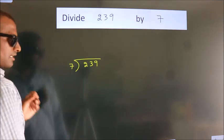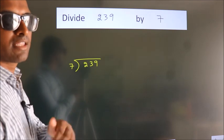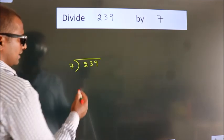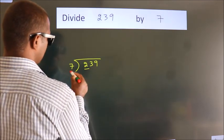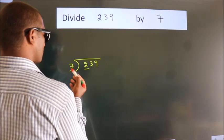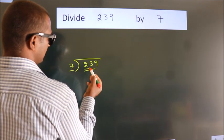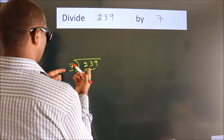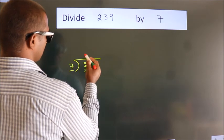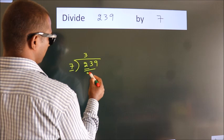This is your step 1. Next, here we have 2. Here 7. 2 is smaller than 7, so we should take 2 numbers. 23. A number close to 23 in the 7 table is 7 times 3, which is 21.